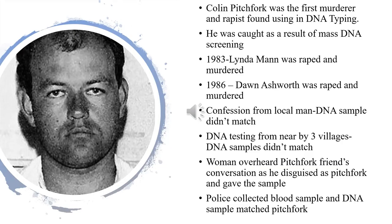Colin Pitchfork was the first convicted murderer and rapist who was found using DNA profiling. He was caught as a result of mass DNA screening. Pitchfork lived in a village in the county of Leicestershire, England, and was working in Hampshire's Bakery, England.